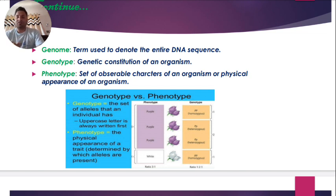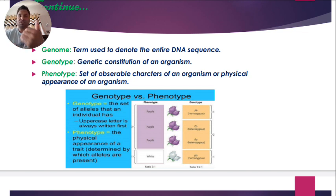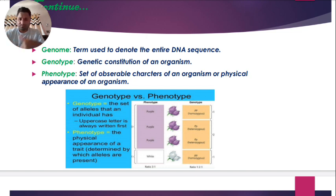Genotype and phenotype are the most important terms. To remember: genotype starts with 'ge,' meaning genetic constitution — it is the genetic constitution of an organism. It tells us what genes are present, which are dominant, and which are recessive. Phenotype refers to the set of observable characters or physical appearance of an organism.